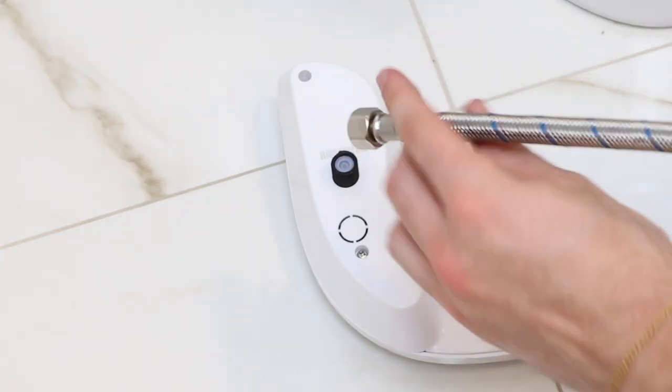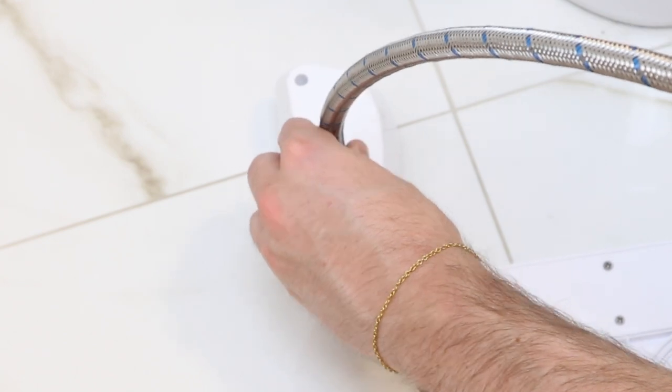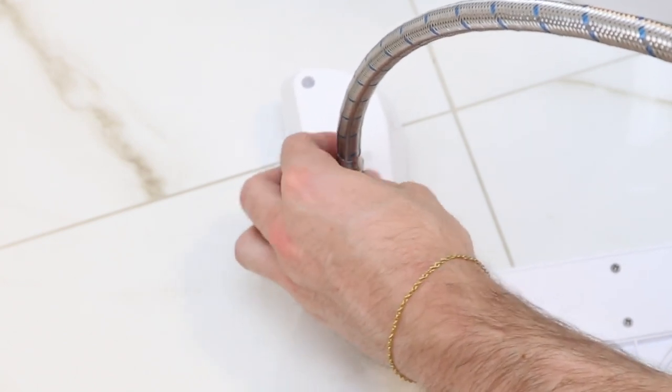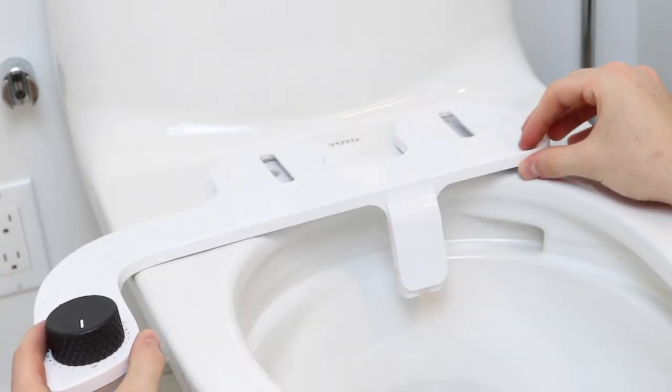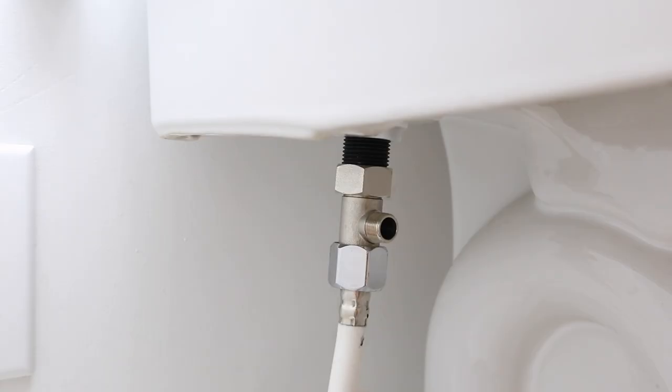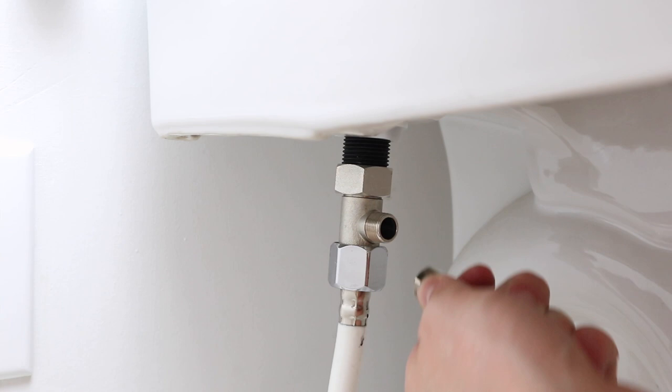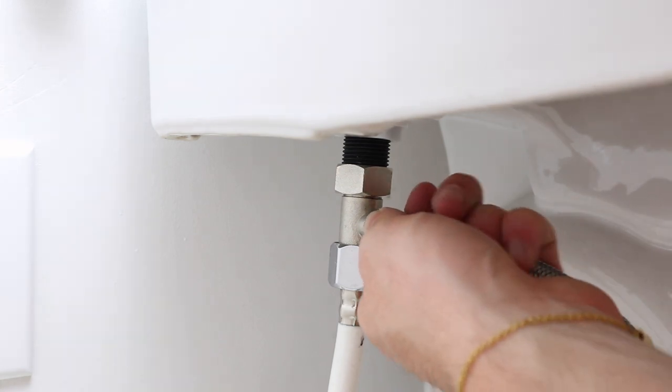Attach one side of the flexible steel hose that we've included to the bottom of the brode. Lightly place the brode on the top of the toilet. Now take the other end of the flexible steel cable and attach it to the T connection on the mega adapter.